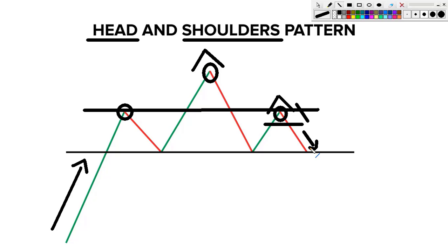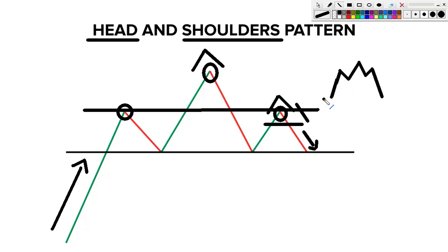Most of the time, if it's a legit original pattern, it goes downwards. So you have the left shoulder, the right shoulder, and then usually it goes down — same direction from the right shoulder — and that's what you're looking for.